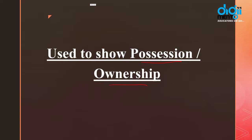Jab bhi hum kisi tarah ka possession dikhate hain — possess matlab kisi cheez par adhikaar hona ya ownership hona — toh us case mein hum hamesha 'has' or 'have' ko as a main verb use karte hain. Kai logon ka maanna hota hai ki ownership ya possession woh hota hai jis par aapka poora adhikaar hota hai, jiske liye aapne paise kharchey hain. Lekin aisa nahi hota. Like for example, maan lijiye aap student hain, aap working nahi hain, aap apne parents par dependent hain, aur aapke parents ne aapko ek bike ya iPhone khareed ke diya — toh aap yeh bhi kehte hain 'yeh mera phone hai', chahe uski payment aapke father ya mother ne ki ho. Possession ya ownership ka matlab hamesha woh nahi hota jo aapne kharida hai, lekin usually hum ownership ya possession kehte hain jab aap us cheez ko istemal karte hain.